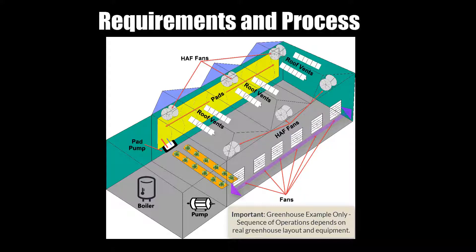Stage two is active cooling with fans. The HAF fans turn off and roof vents close to prevent an air path short circuit. The pad vent opens to allow exhaust fans to pull air across the greenhouse. Stage three is evaporative cooling with a misting valve and pads — a final rapid cooling step. Pads sprinkle water down a corrugated wall and air hits it, immediately cooling down, and the pads add humidity to the air.